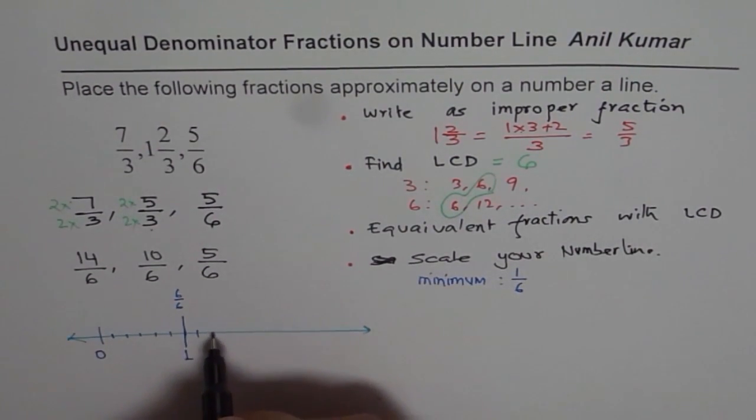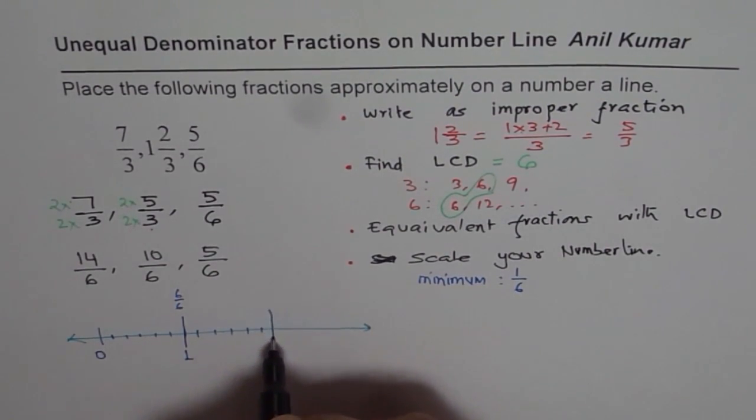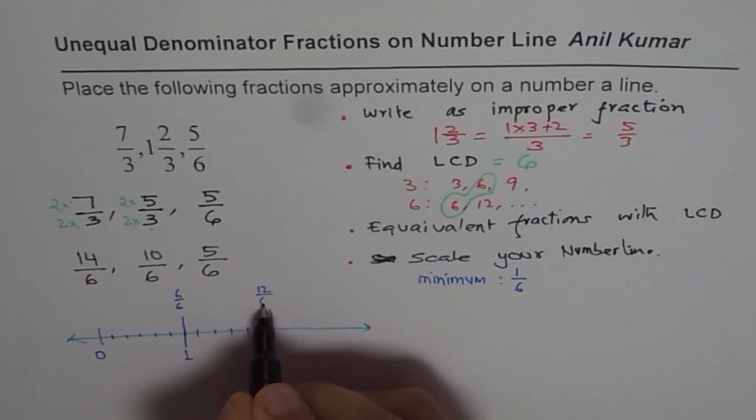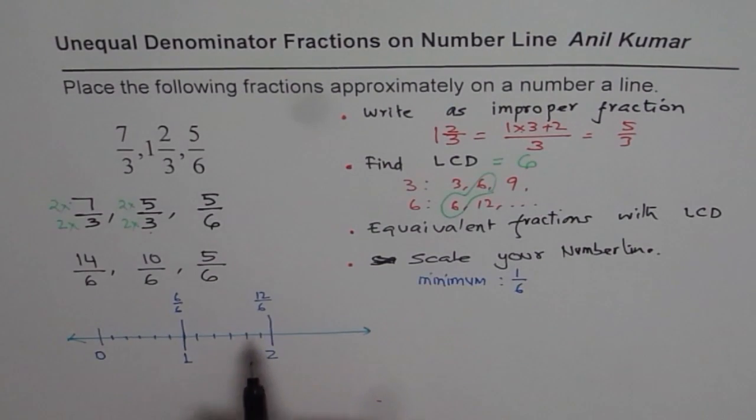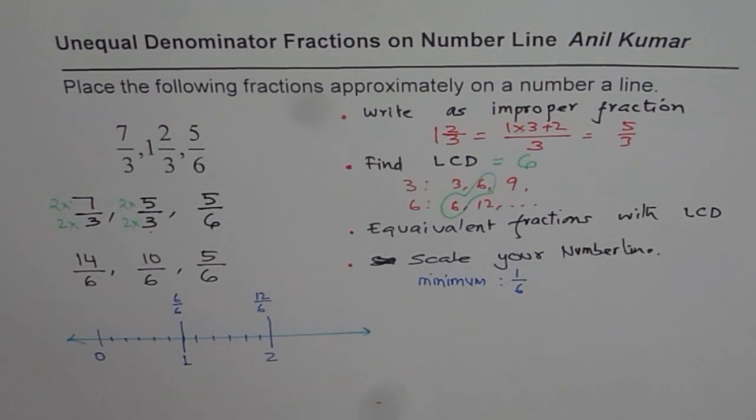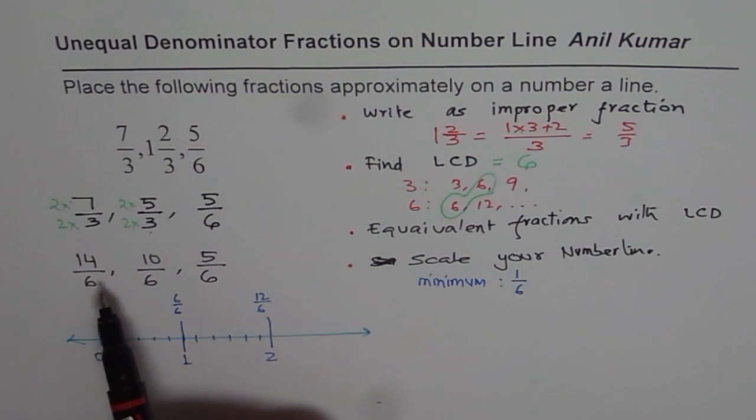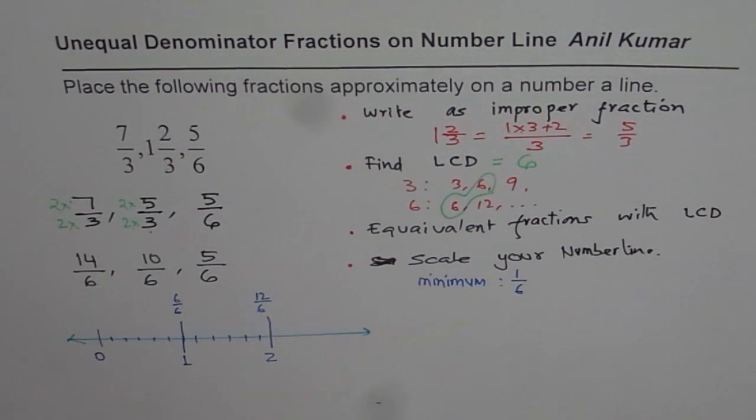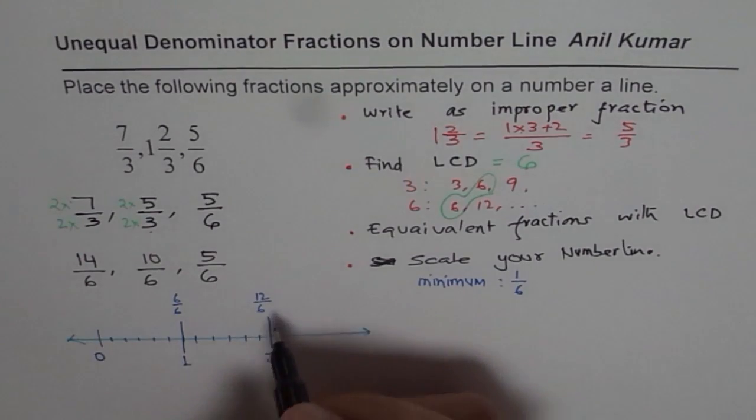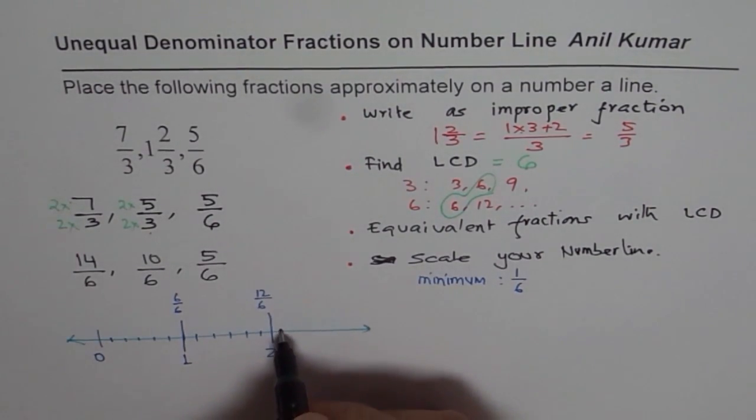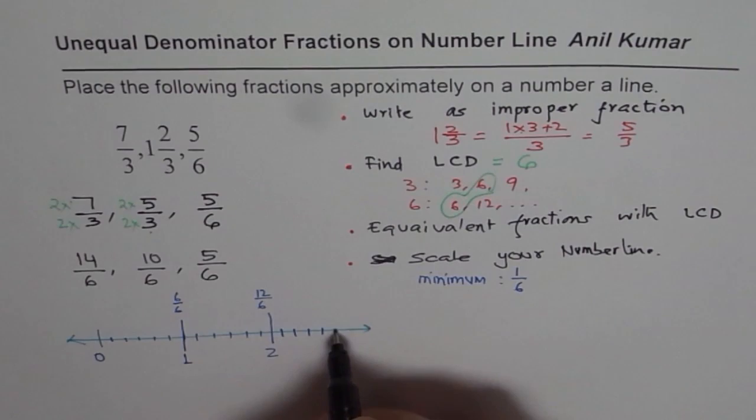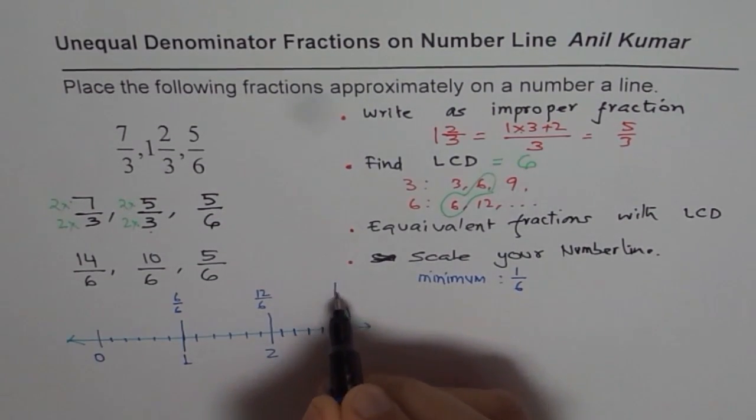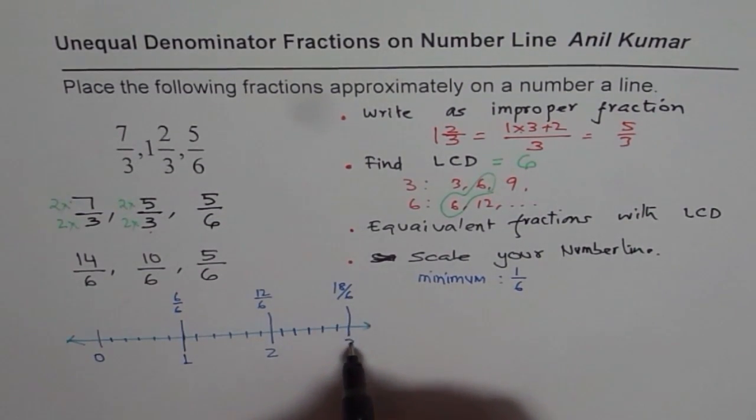Now 7, 8, 9, 10, 11 and 12. So that becomes 12 over 6 or 2. Well, these are less than 2, so we'll stop here. Wait, this is 7 over 6, so this is more than 2. Let's go further: 12, 13, 14, 15, 16, 17, 18. So we get 18 over 6 or just 3.